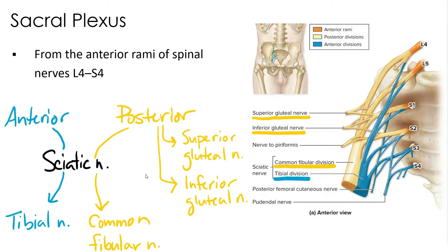The nerves of the sacral plexus, which originates from the anterior rami of L4 through S4, include the gluteal nerves and the sciatic nerve. The sciatic nerve then gives rise to the tibial nerve and ultimately three fibular nerves.